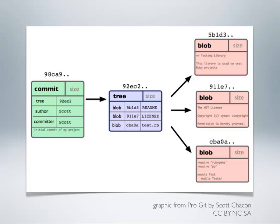So it looks like this: we have a commit, with an abbreviated SHA-1 above it. The commit points to a tree. That tree has three blobs in it — in this case a readme file, a license file, and a test.rb file. Each of those blobs is hashed down. This commit would also point to its parent commit if it weren't the first in the repository. So a commit points to its parent, that commit points to its parent, all the way back to the beginning of the history of the repository.